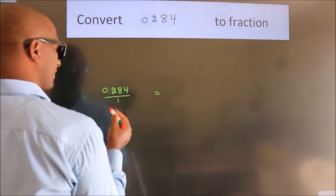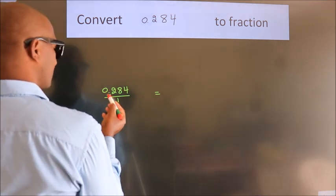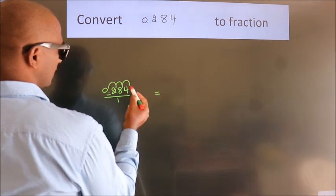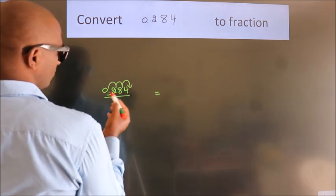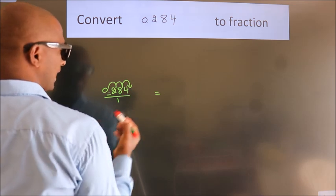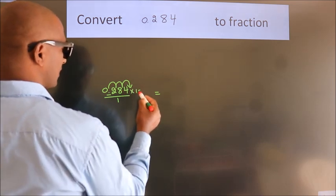we have to move this decimal after 1, 2, 3 numbers. To move this decimal after 3 numbers, we have to multiply it with 1000.